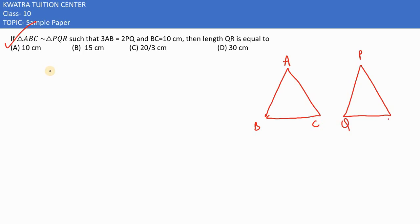And it is given that 3AB is equal to twice of PQ. So what is the relation? AB over PQ is there, which is like 2 over 3.